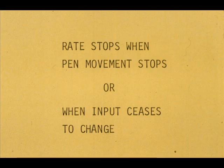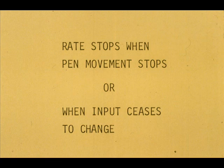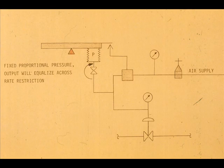Rate action ceases when the pen stops moving. The reason for this is a steady output pressure will equalize across the rate valve, thus giving normal proportional response.